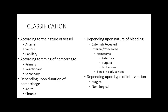Depending upon the nature of the bleeding, there are two types: external revealed bleeding — meaning you can see that there is bleeding, such as from a cut, gunshot, or road traffic accident where the skin is broken and blood comes out. You know the area where damage has occurred and can treat it easily. The problem comes with internal concealed bleeding, where you don't know where it is happening.